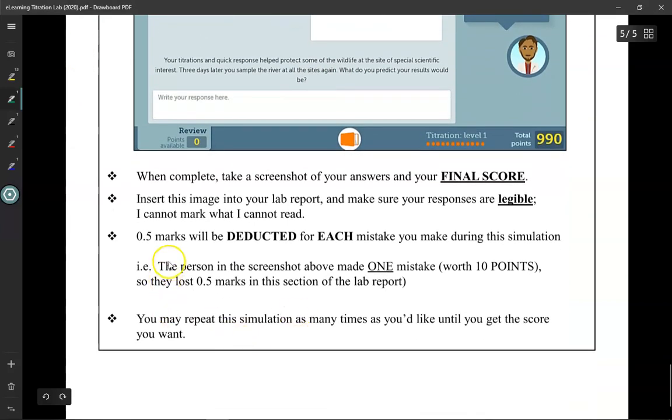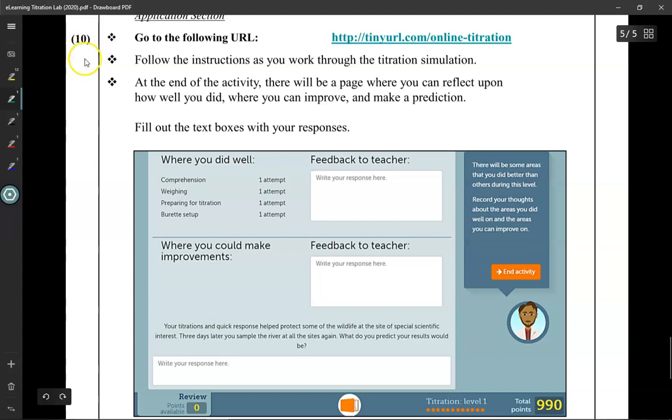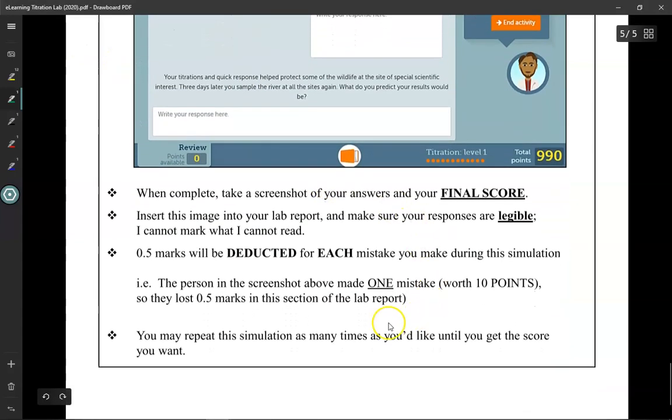But as well, I will be deducting half a mark for each mistake you make during the simulation. The maximum number of points you can get during the simulation is 1,000 points. For each mistake you make during the simulation, you lose 10 points. So in this case over here, this person lost 10 points. That means they made one mistake, which means they get 0.5 marks deducted from these 10 marks over here.